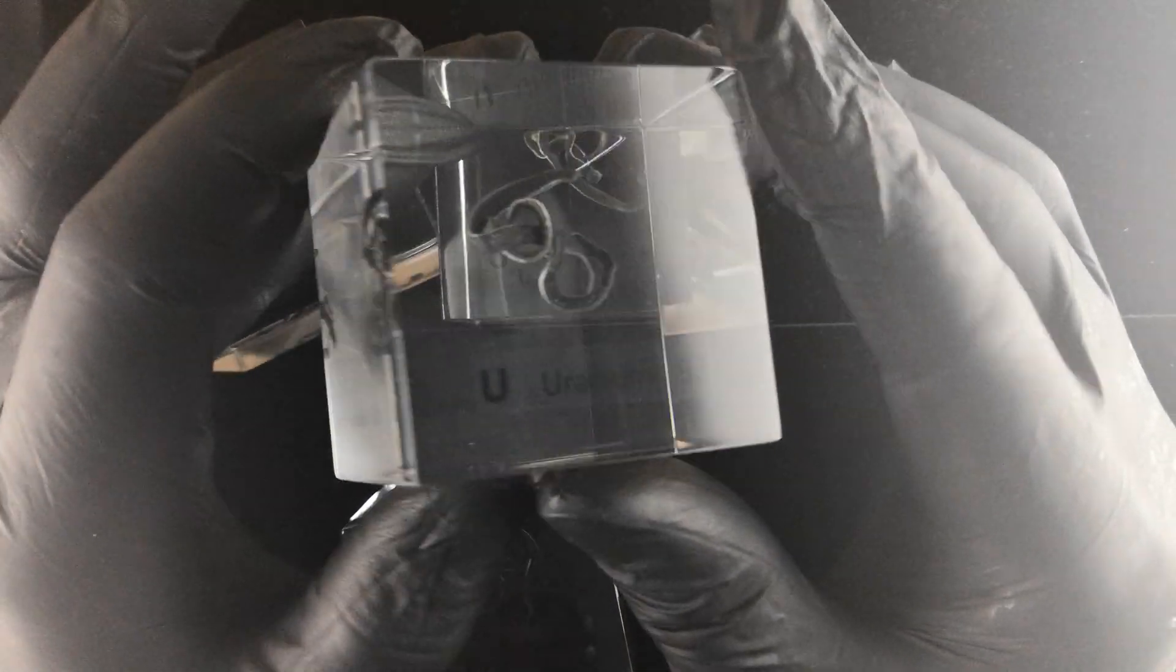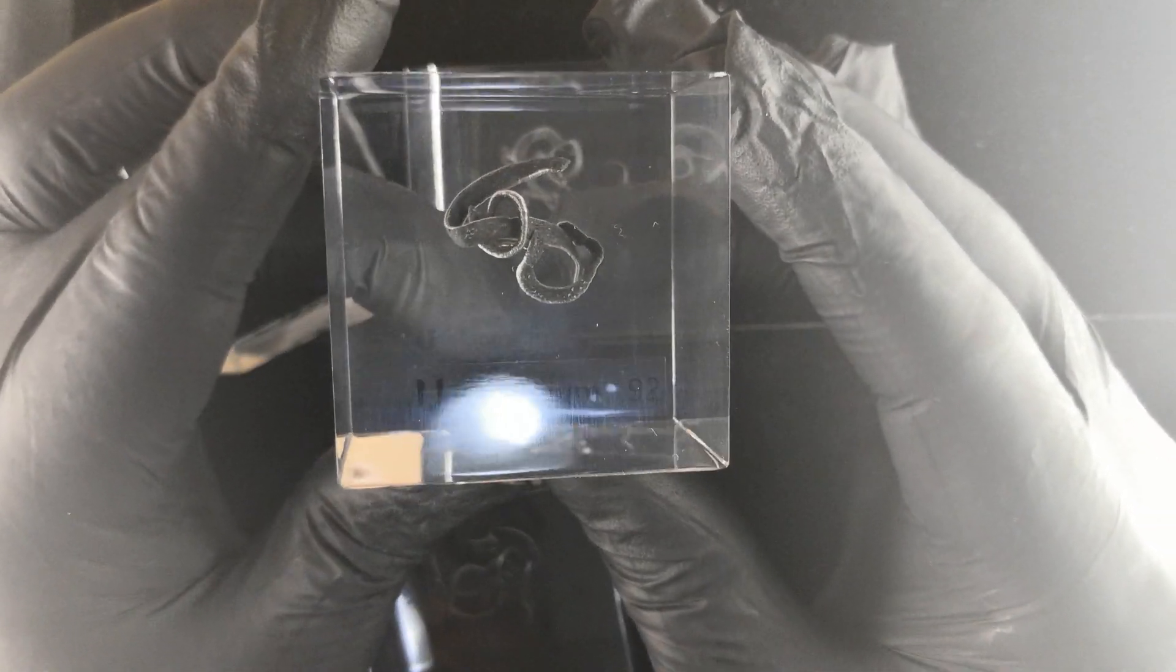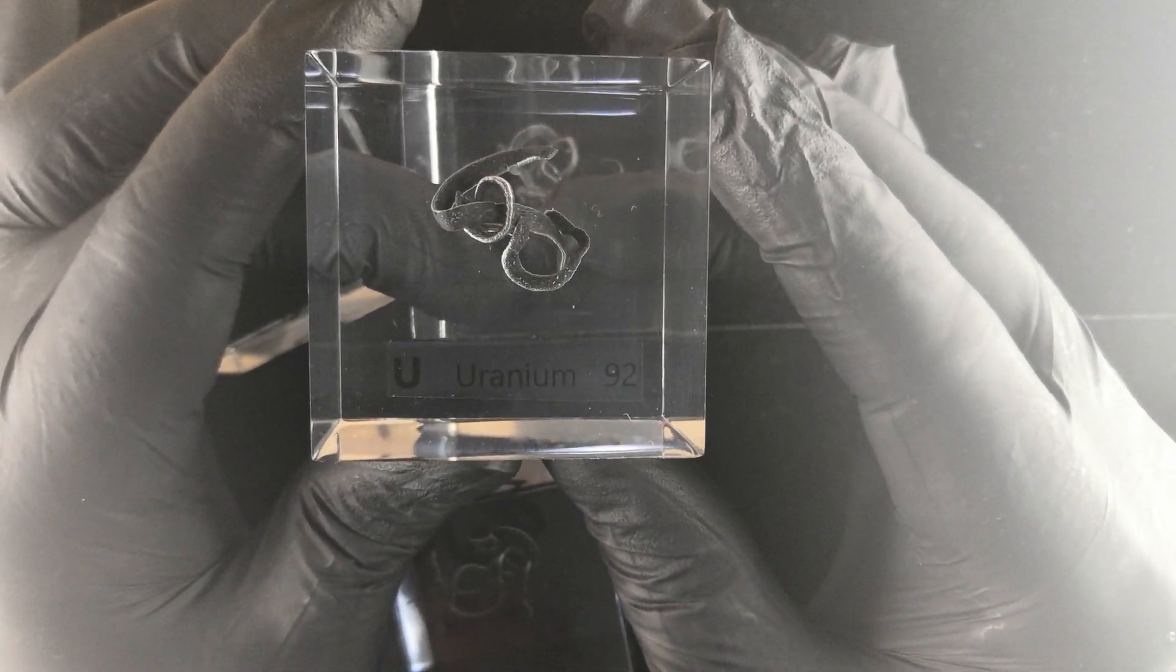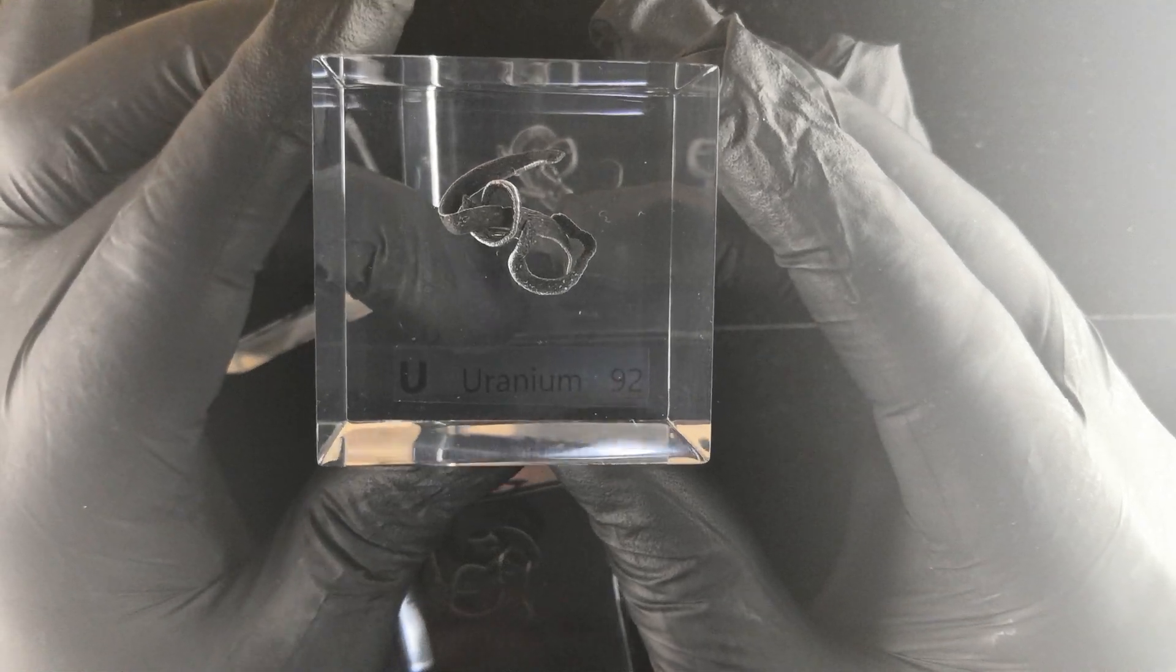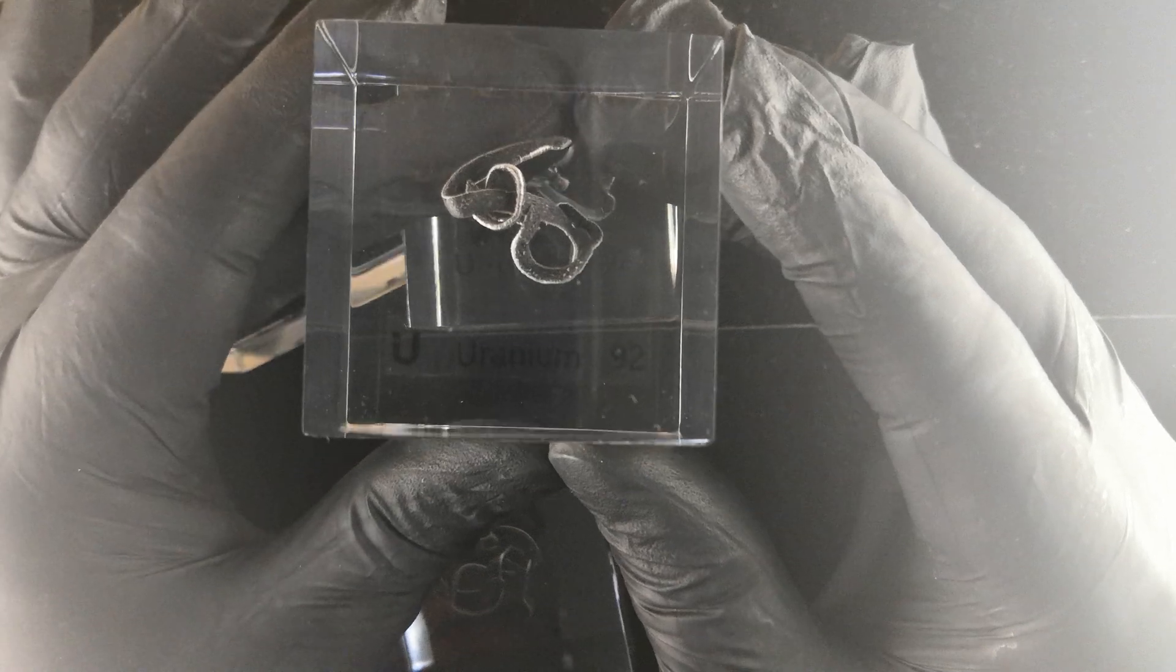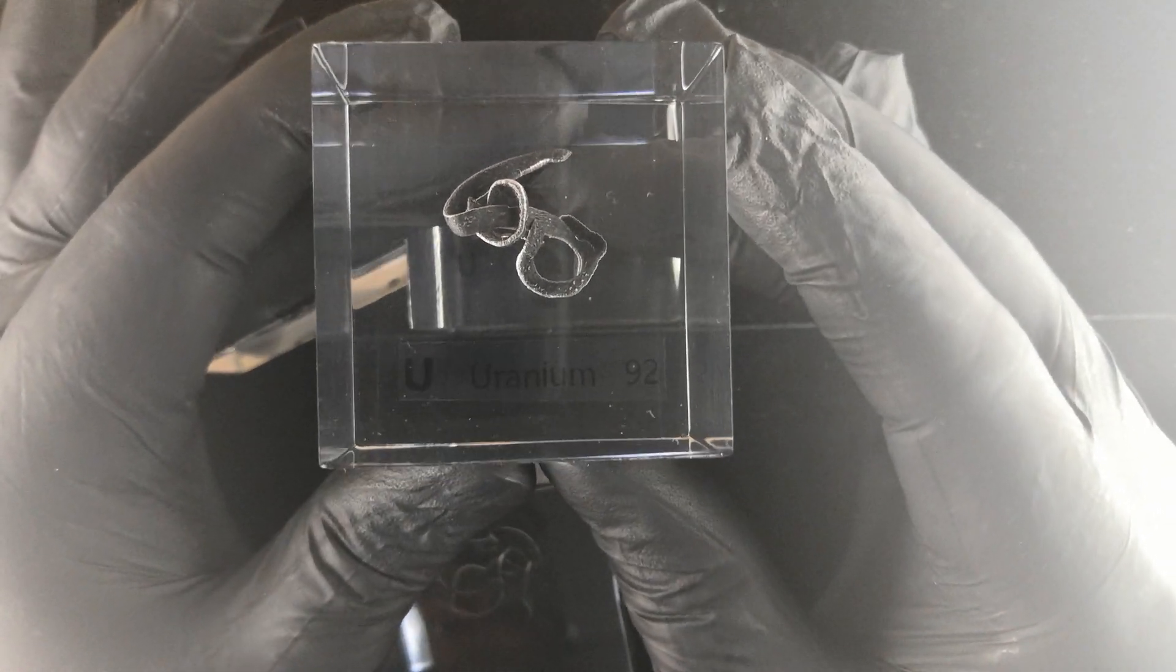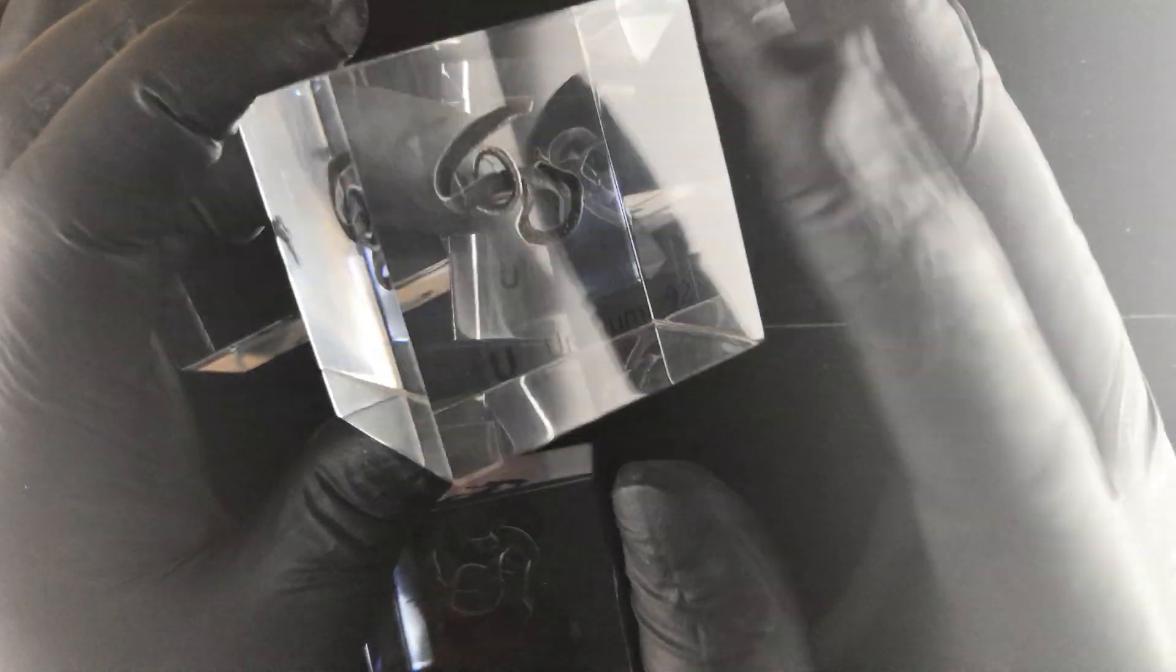There's very small amounts of decay products—once the uranium decays, it decays into other radioactive elements which may emit gamma rays or beta rays. But the amount is so small, not even measurable outside of a laboratory. So you will not be able to measure any radioactivity as shown.